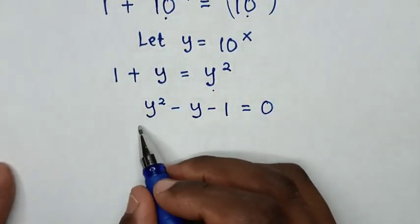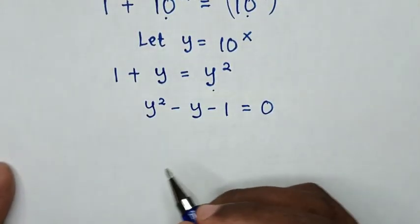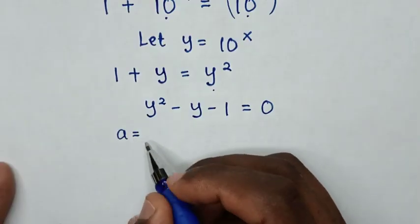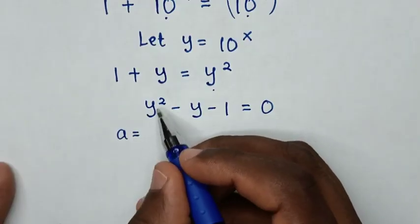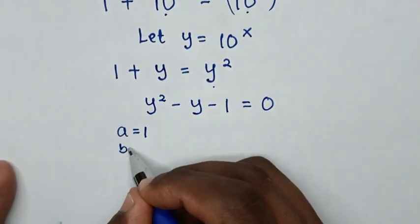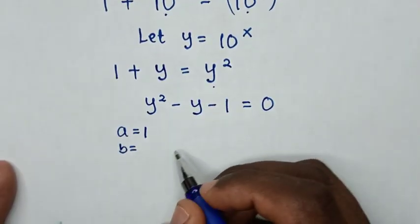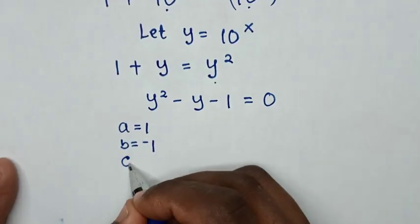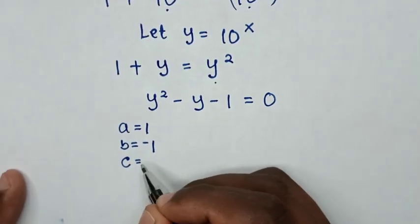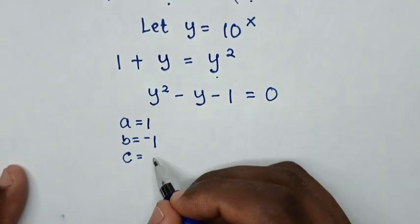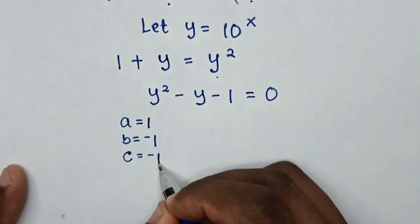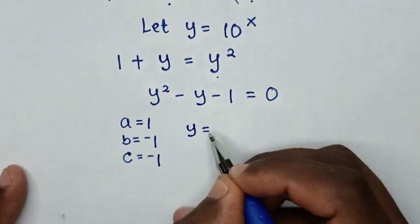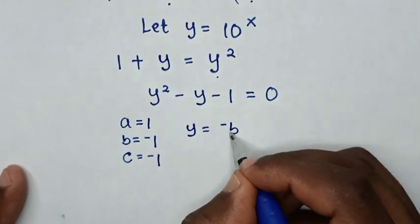From this quadratic equation, a is equal to the coefficient of y², which is 1; b is equal to the coefficient of y, which is negative 1; and c is equal to the constant, which is negative 1. Then from the quadratic formula: